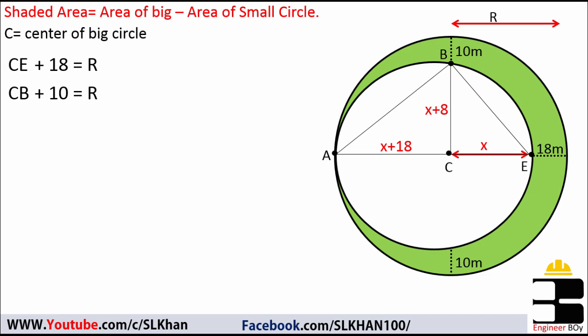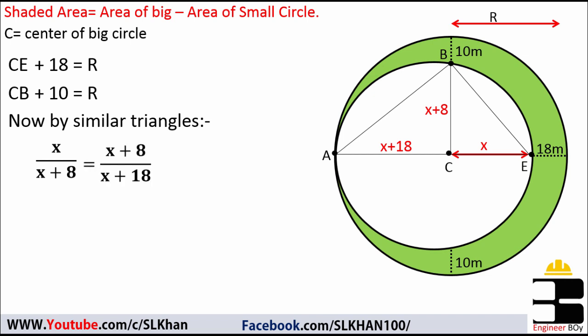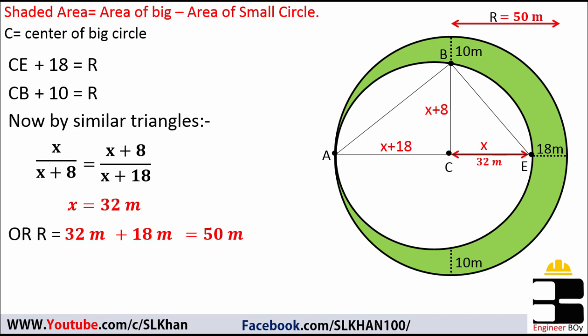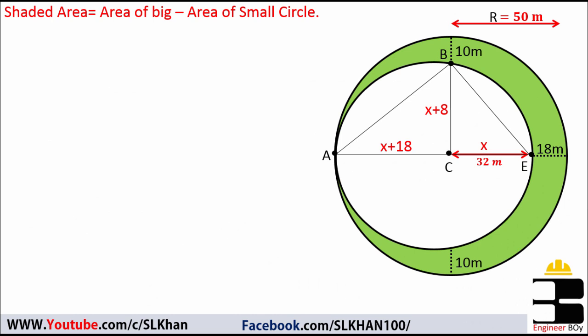Now we can solve this by similarity of triangles. By similarity of triangles, we can say X divided by (X plus 8) must be (X plus 8) divided by (X plus 18), from which we get X equals 32 meters. So the radius of the big circle must be 32 plus 18, which is 50 meters.